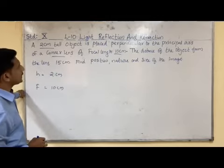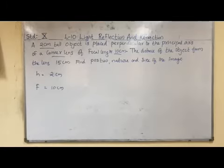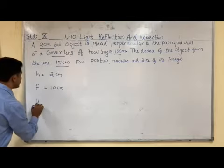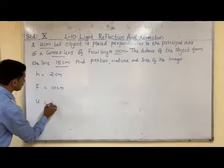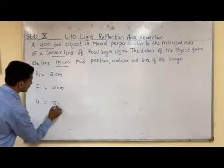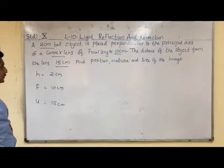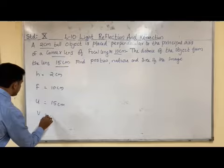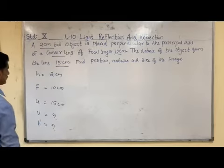The distance of the object is also given, so u is given — the distance of the object from the lens is 15 cm. You are supposed to find the position, nature, and size of the image, so you have to find v and h' as well as the nature.